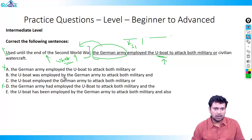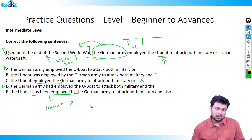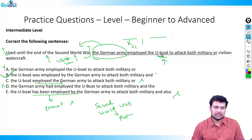Option B: 'The U-boat was employed by the German army to attack both military and civilian watercraft.' This looks correct. Option C: 'The U-boat employed the German army' — that implies the U-boat is employing the army, which is wrong. Option D: 'The U-boat has been employed' — 'has been' introduces present flavor, but the question refers to the Second World War so past tense is required. Therefore the right answer is option B.